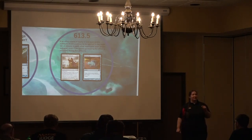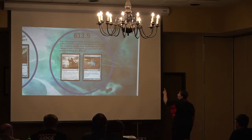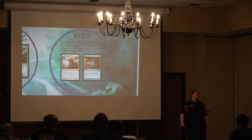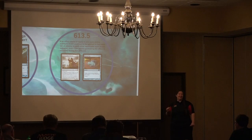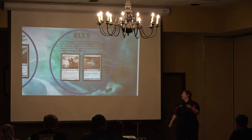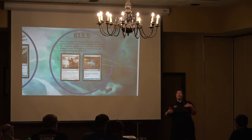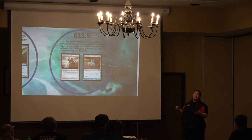What happens if later in the turn our devotion drops below five? Still a creature — why? Because Turn to Frog changed it while it was already a creature. Turn to Frog doesn't say 'target creature becomes a creature.' All it does is say 'this creature is a 1/1 blue frog.' So it doesn't actually give it the ability to be a creature.